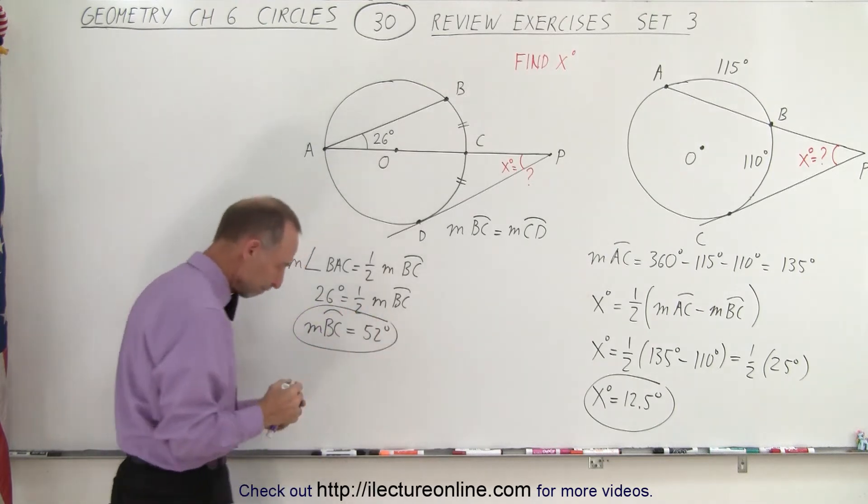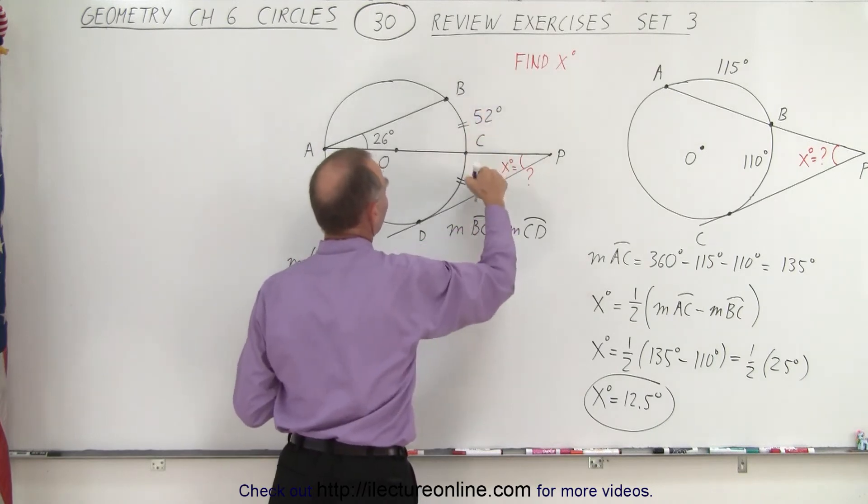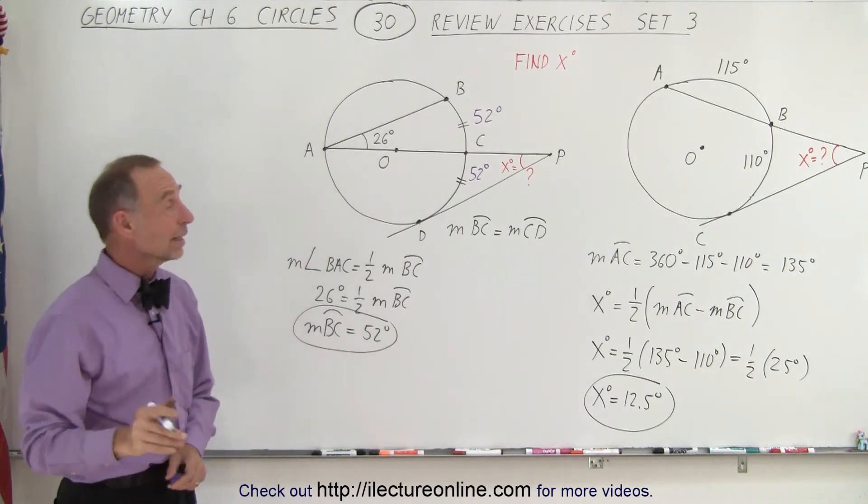So that helps out. So now that we know that, we know that this must be 52 degrees, and therefore this must be 52 degrees as well. Then in addition, since this is semicircle right here, we know that the measure from A to B must be 180 minus 52.